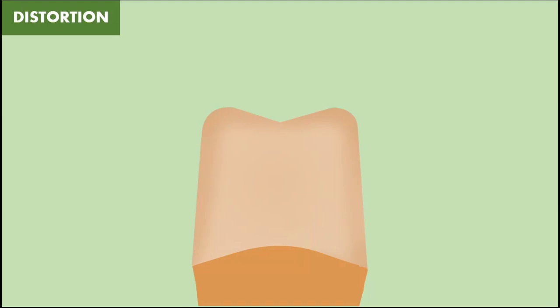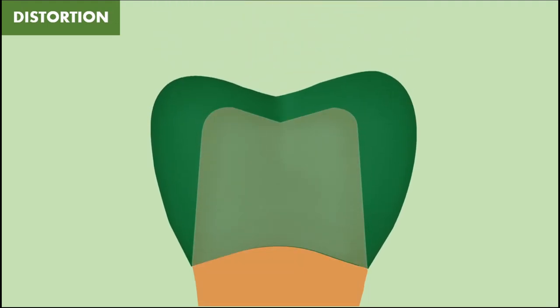The first defect that we are going to see in this presentation is distortion. Distortion of the casting is most probably related to the distortion of wax pattern. This type of distortion can be minimized or prevented by proper manipulation of the wax and proper handling of the wax pattern. The wax pattern is made and it is then attached to the sprue former and it is then invested in the investment material.